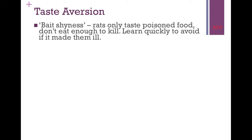The last part of the AO1 is taste aversion. Research into animals shows something called bait shyness. If you give rats poisoned food, they won't eat all of it — they'll just have a taste — because eating it all could make them ill enough to die. Humans may have had this same evolutionary mechanism. Rats learn quickly to avoid things that made them ill, and we can apply that theory to humans from an evolutionary point of view.